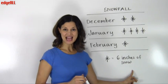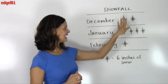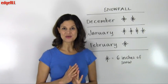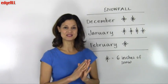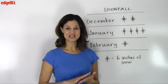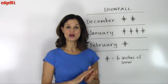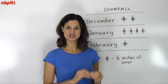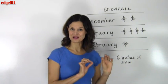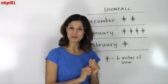So every time we see a snowflake in our graph, we know that that equals six inches of snow. Using a snowflake to represent these six inches of snow, we can graph snowfall using a certain number of snowflakes for each month.